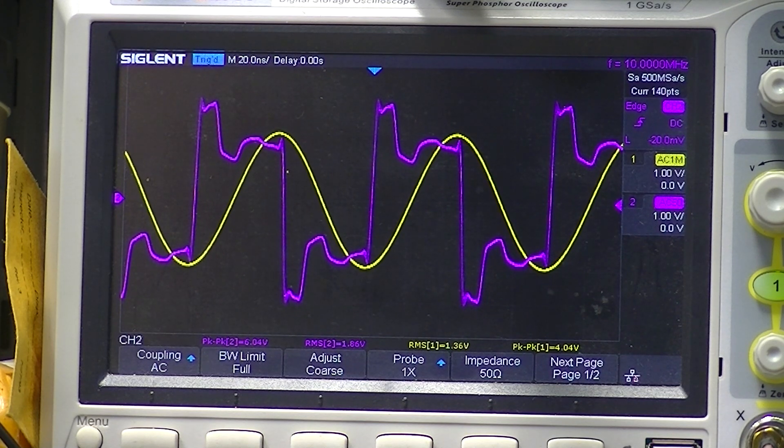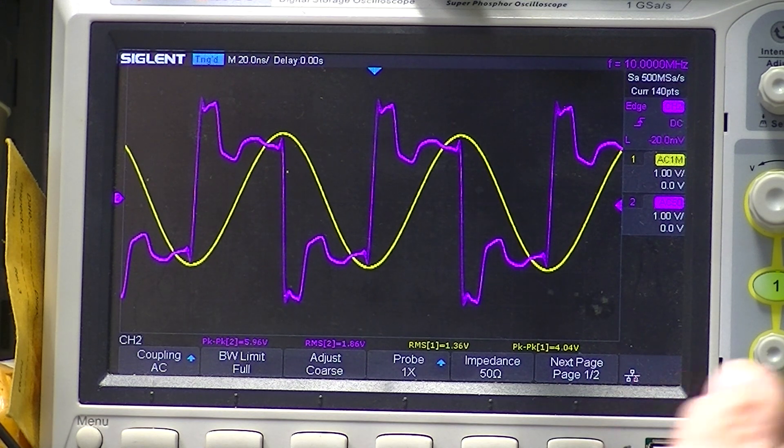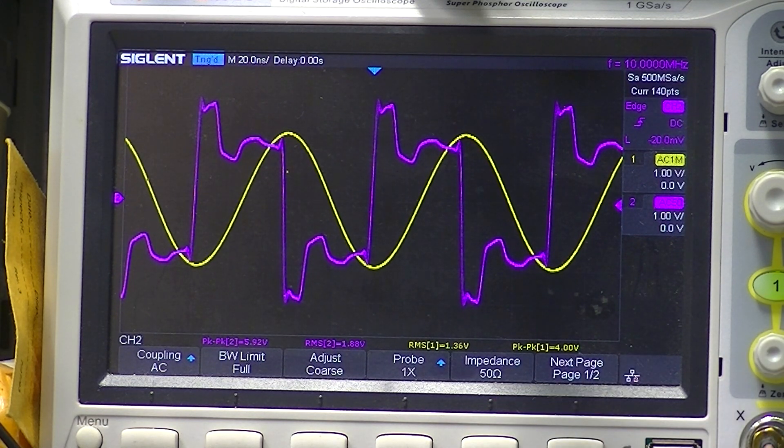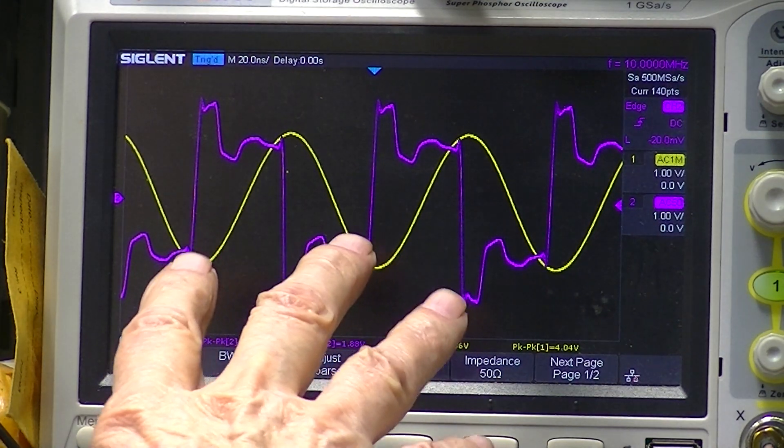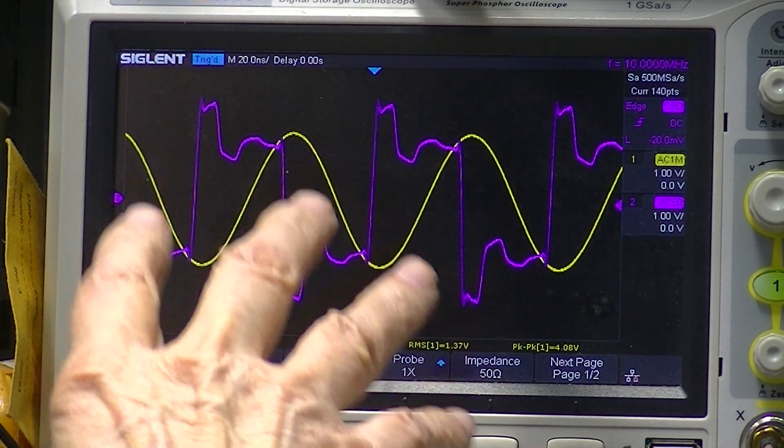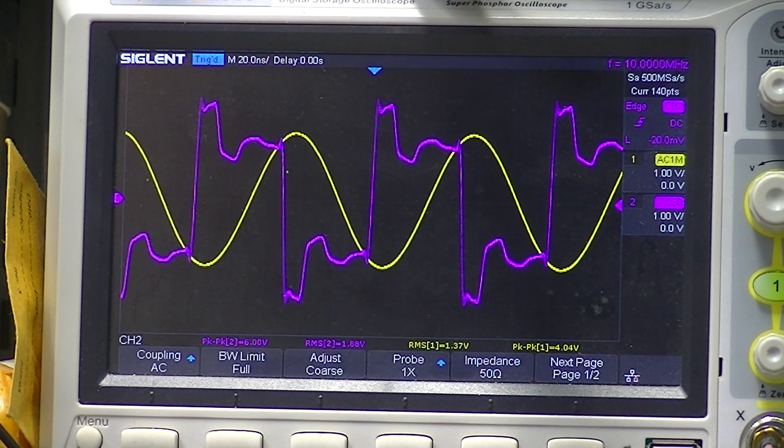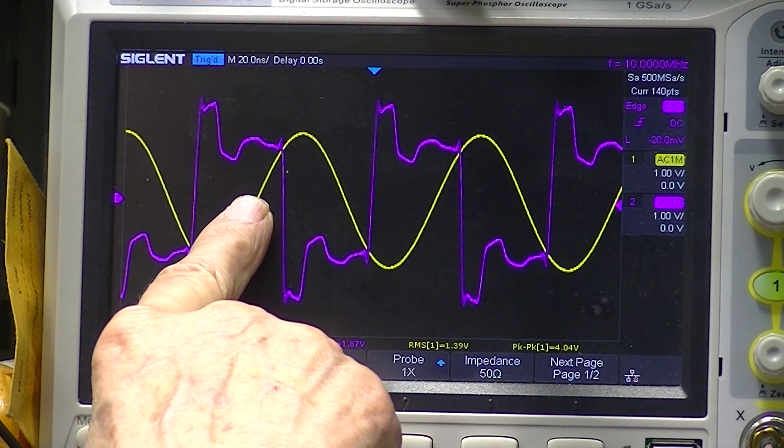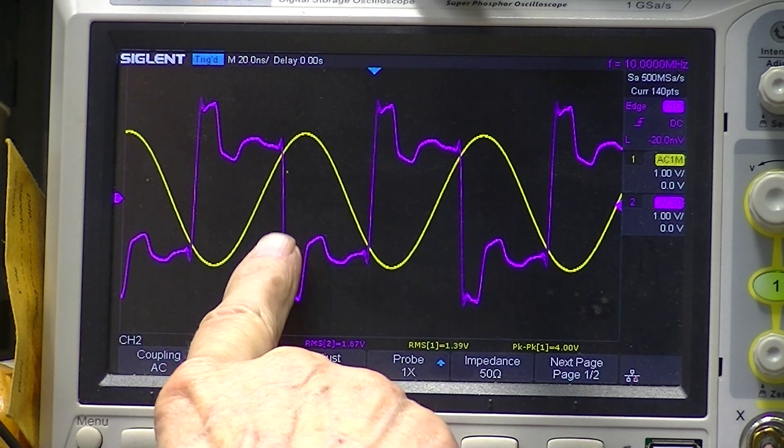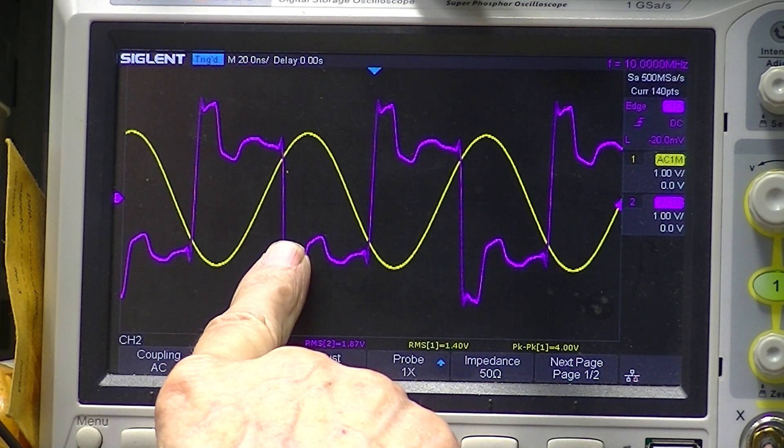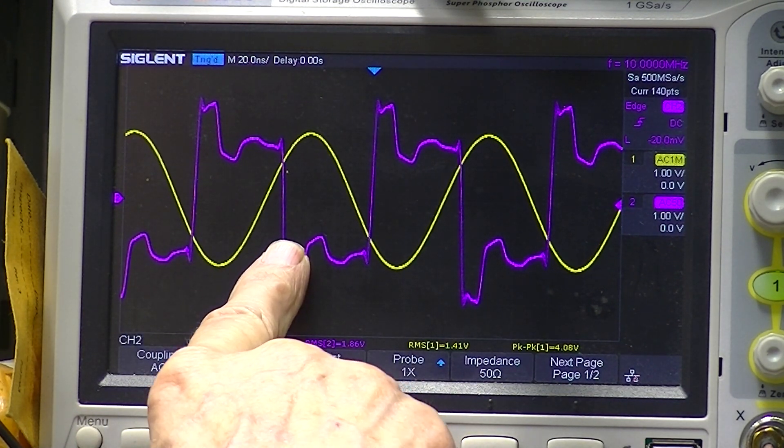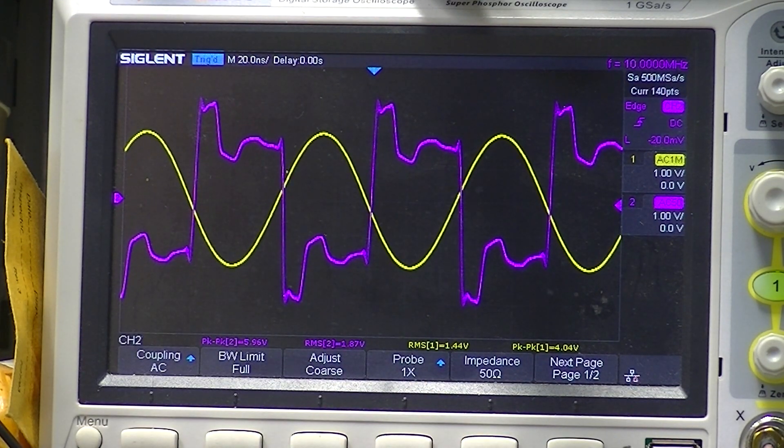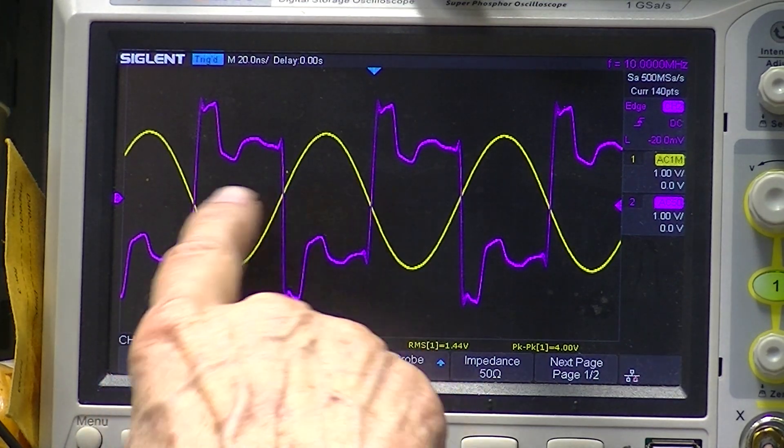They're not connected in any way except to the input of the oscilloscope, and you can see that they're, if not perfect, very very close. This yellow being a GPS stabilized signal, this purple one being from the TCXO internal to the signal generator.